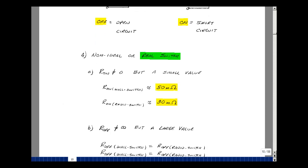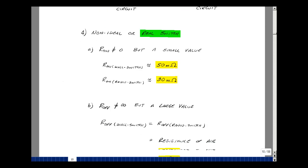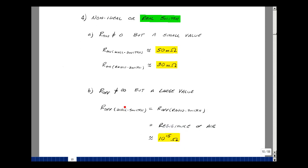In the off state, we expect the resistance of the switch to be infinity, but in reality there is some resistance there. So the wall switch and this radio switch, when we have the switch disconnected, we just have the air between the contacts. Now depending on the humidity of the air, we could have a resistance that could be on the order of 10 to the 15 ohms.